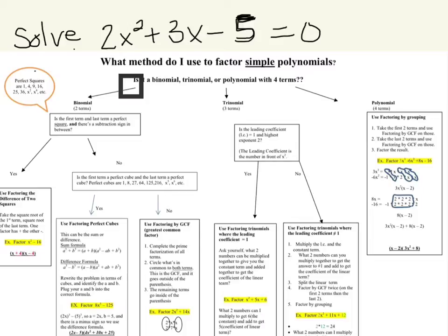2x² is the first term, 3x is our second term, minus 5 is our third term, so this is a trinomial. So we follow our steps here.